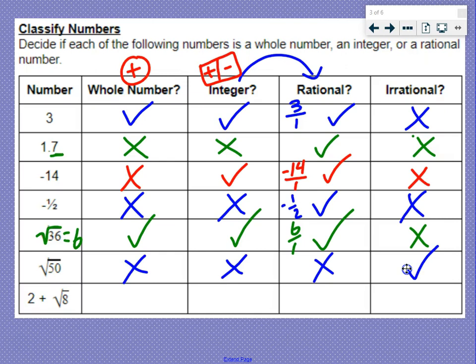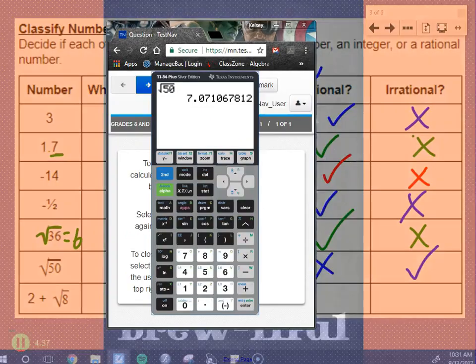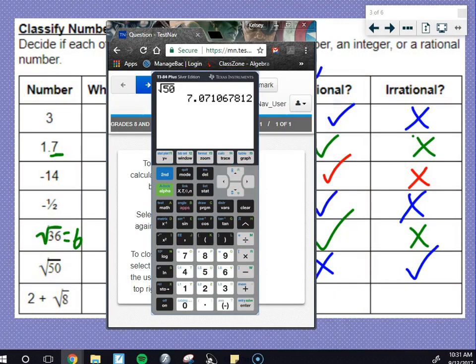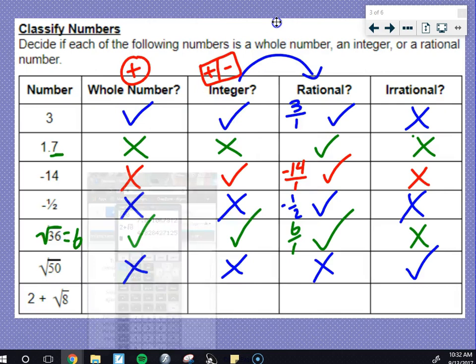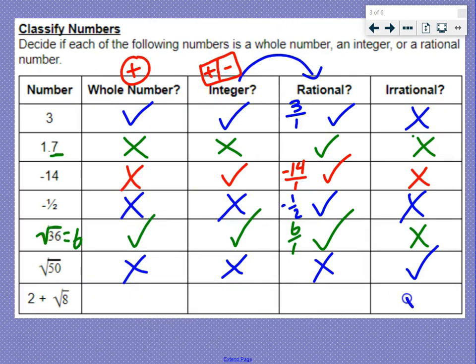Last one, 2 plus the square root of 8. Let's bring back up that calculator. So we can take a look at 2 plus the square root of 8. When we get 4.828427125, your calculator cuts this short, but this number actually goes on forever and there's no repeating. We're not repeating a pattern. So since it's not ending, not repeating, that makes it irrational and none of the other ones.